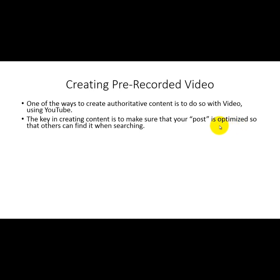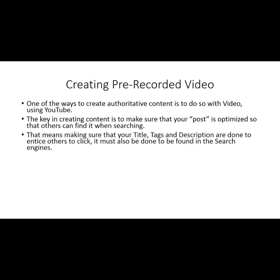The key to creating content on YouTube is to make sure that your post — your video — is optimized so that people can find it when searching. That means your title, your tags, and your description need to be done to entice others to click, and also to be created in a way that people can find it inside the search engine or inside YouTube.